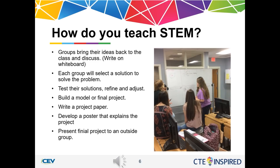They will test their solutions, refine and adjust. One of the best learning tools in this project-based application is that the students are going to fail and fail — this is something a lot of students are not accustomed to. Failure is not in their vocabulary, but we turn failure into a good thing because it becomes a learning process. If they don't get it right, they can come back and refine and adjust their solution. From there, they can build a model or final project. We like for students to track what they're doing, and at the end they will write a research paper, develop a poster, and present the final project to an outside group.